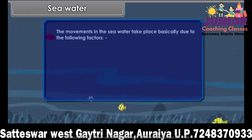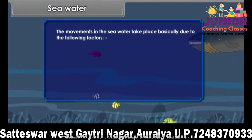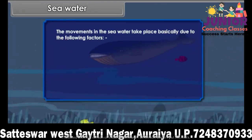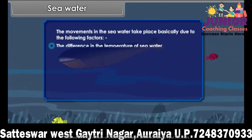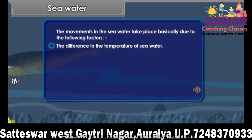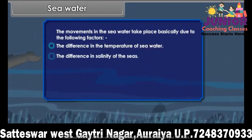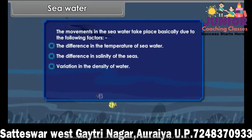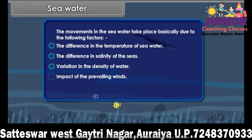The movements in the seawater take place basically due to the following factors: the difference in the temperature of seawater, the difference in salinity of the seas, variation in the density of water, and the impact of the prevailing winds.